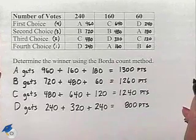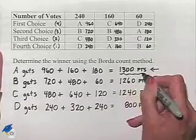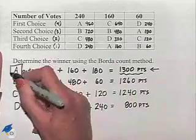Our winner will be the candidate with the most number of points. That occurs for candidate A with 1,300 points, and A is the winner.